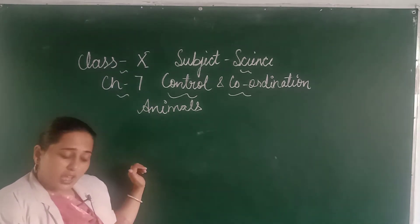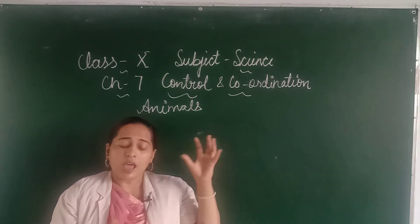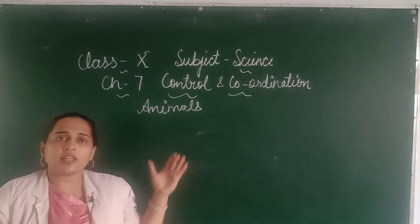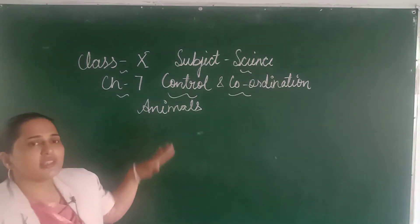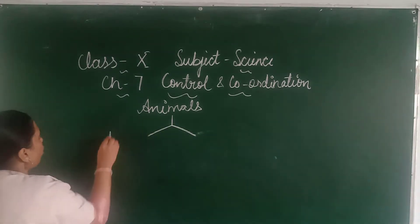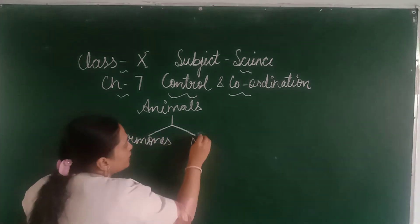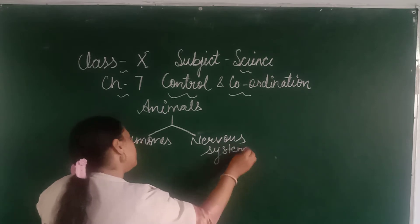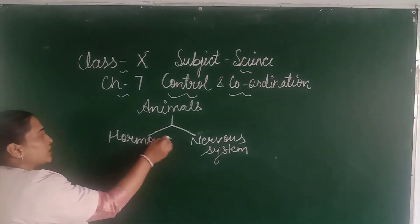So that is control and coordination. The brain is the controlling center, and all other organs coordinate with the brain — they follow the signals that the brain gives. Control and coordination in animals happens with the help of two things: the first system is hormones, and the second system is the nervous system, or the brain.